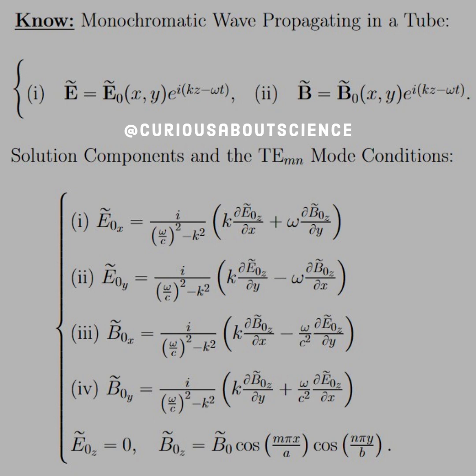What we need to know is the monochromatic plane wave in a tube. We've seen those before. Solution components to the TE_mn mode conditions. E naught equals zero. That's part of being TE wave.